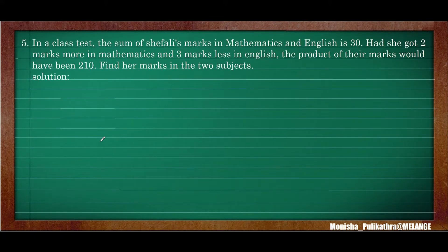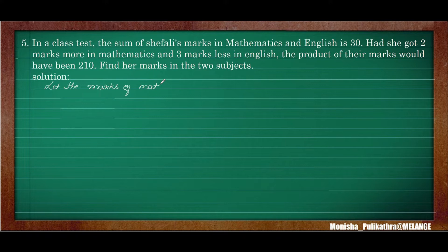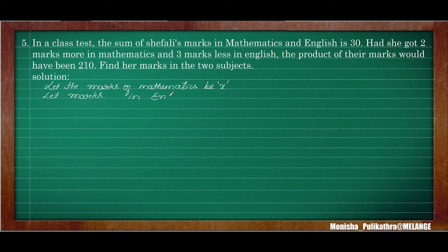Moving on to the fifth question. In a class test the sum of Shifali's marks in mathematics and English is 30. We don't know the individual marks. Let the marks in mathematics be x. Since the total is 30, if one is x then the other will be 30 minus x. So let marks in English be 30 minus x.